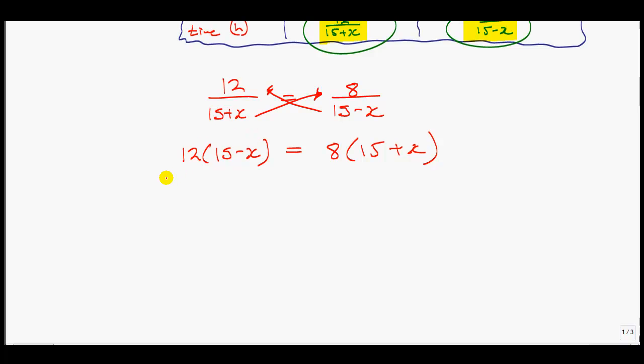Now we will solve this. 12 times 15 is 180 minus 12X. I've used the distributive property. 8 times 15 is 120 plus 8X. Gathering my like terms, I'm going to move the X's to the right-hand side, giving me positive 20X. I'll subtract 120 from both sides giving me 60.